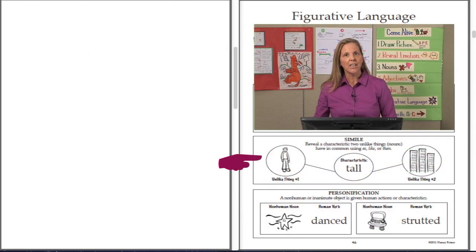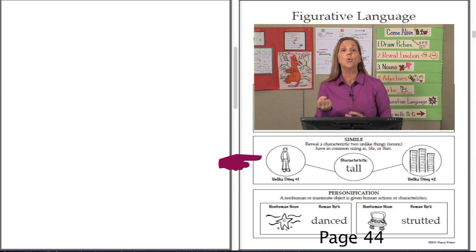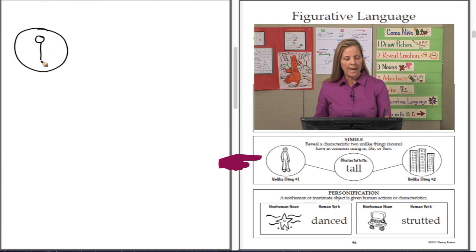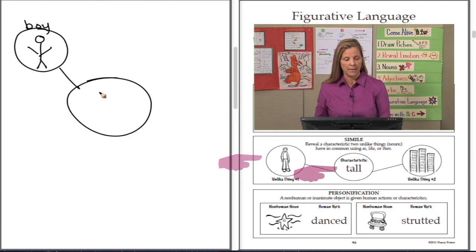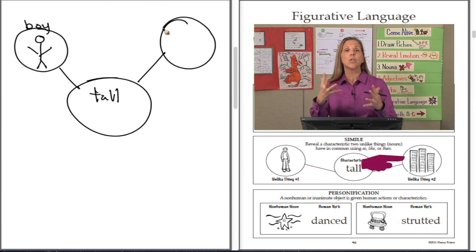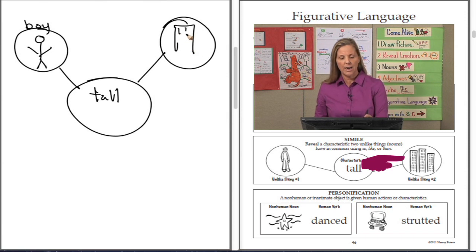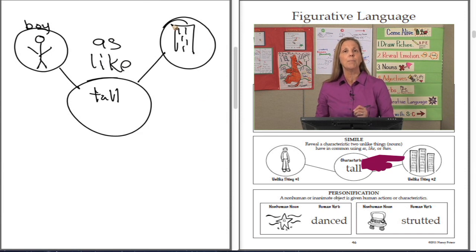Next, we will look at similes. A simile is two unlike things, but they have one characteristic in common. In our example, we were writing about a boy and how tall he was. So this is about a boy. And what characteristic do we want to pop in the reader's mind? How tall he is. So then we ask, what else in the world is really tall? And that's when we came out with skyscraper. So we have our skyscraper here. And then we're going to use the words as or like to make this become a simile. The boy was tall like a skyscraper. The boy was as tall as a skyscraper.